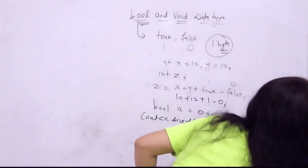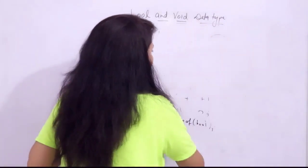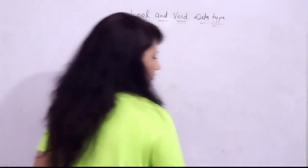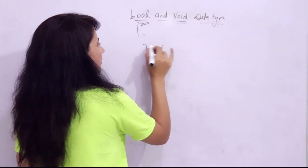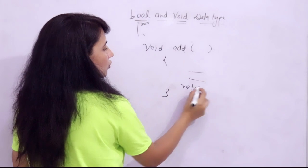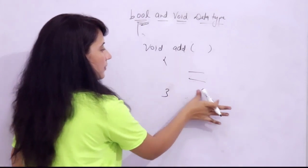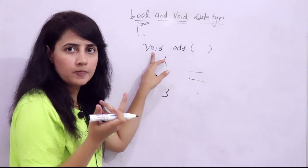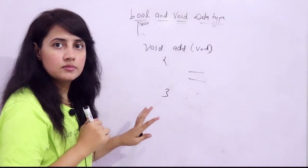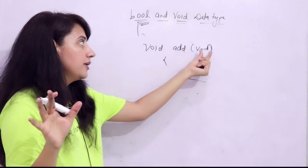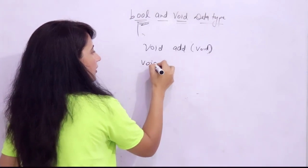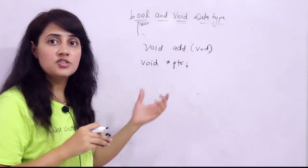Next is the void data type. Void simply means nothing. The first main use is as a return type of a function - if a function is not returning anything, we write void. For example, a function add that has no return statement uses void as its return type. The second use is when a function does not accept any arguments, you write void in the parameter list.